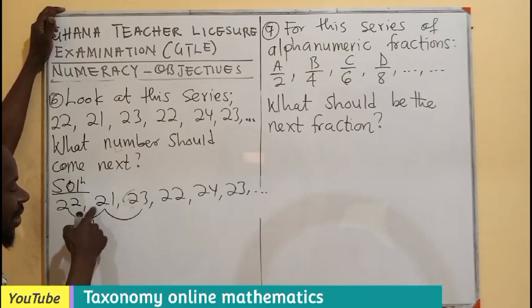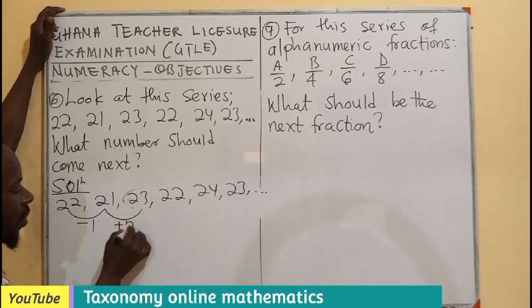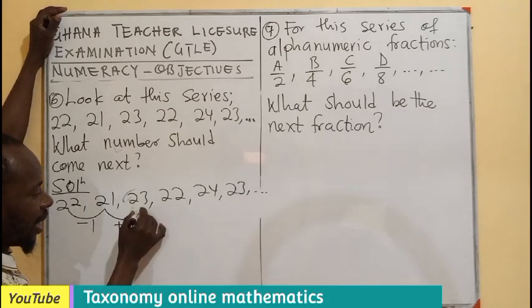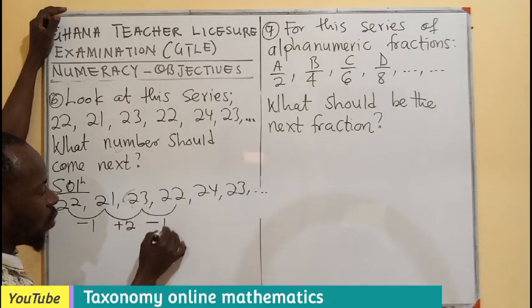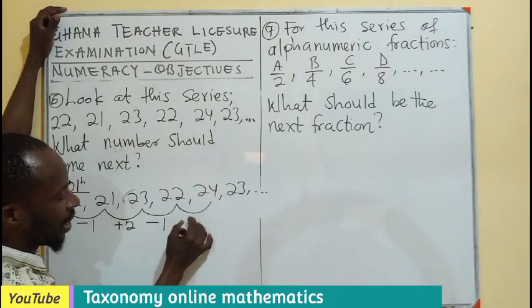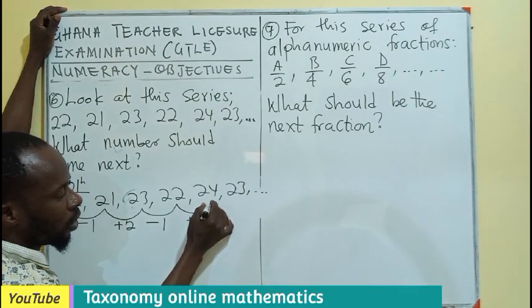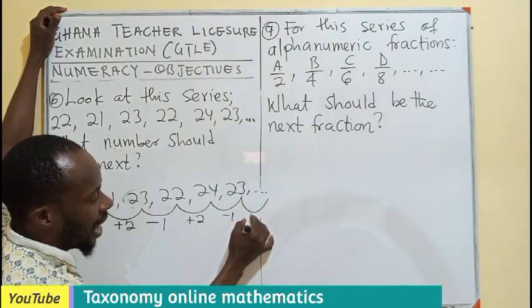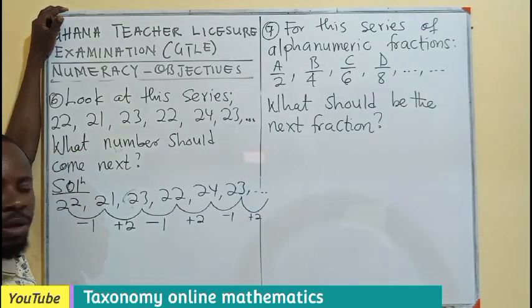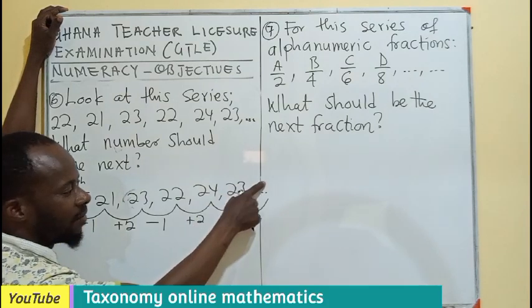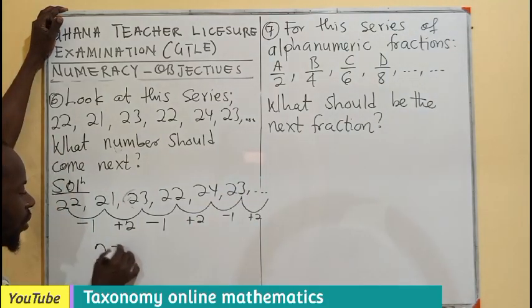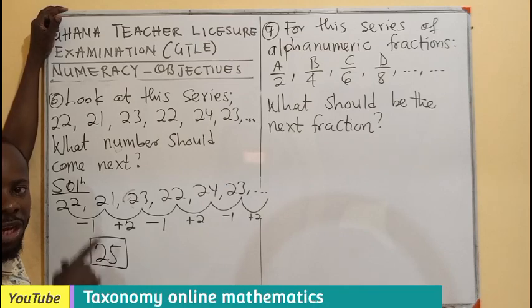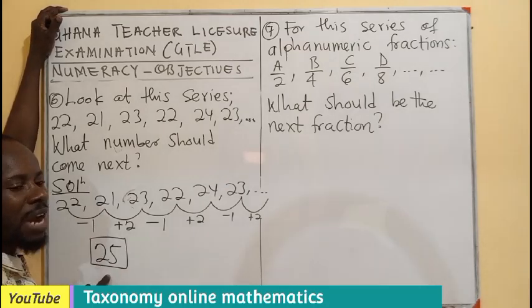Between the second and the third term, there is an addition of 2. And I can also see a reduction of 1. I see addition of 2, a reduction of 1. So I am supposed to see an addition of 2. Meaning, 2 plus this term gives us the next one, which will be 25. So the next term in this series will be 25.